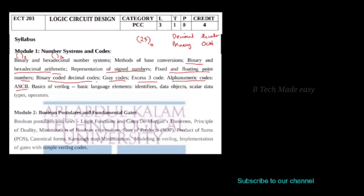The types of codes covered in this module include numbers and their representations. The types of codes are: BCD codes, Grey codes, Excess-3 codes, and alphanumeric codes including ASCII.